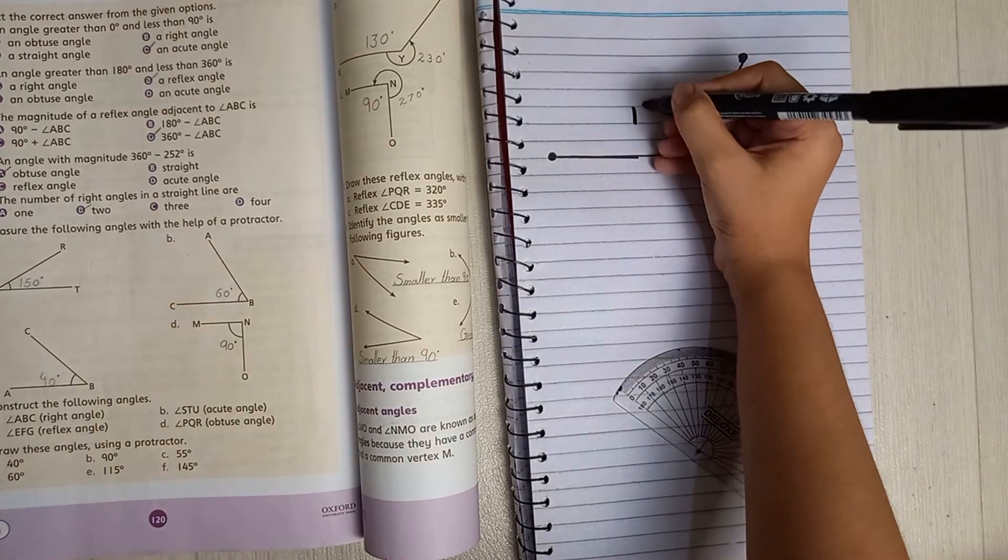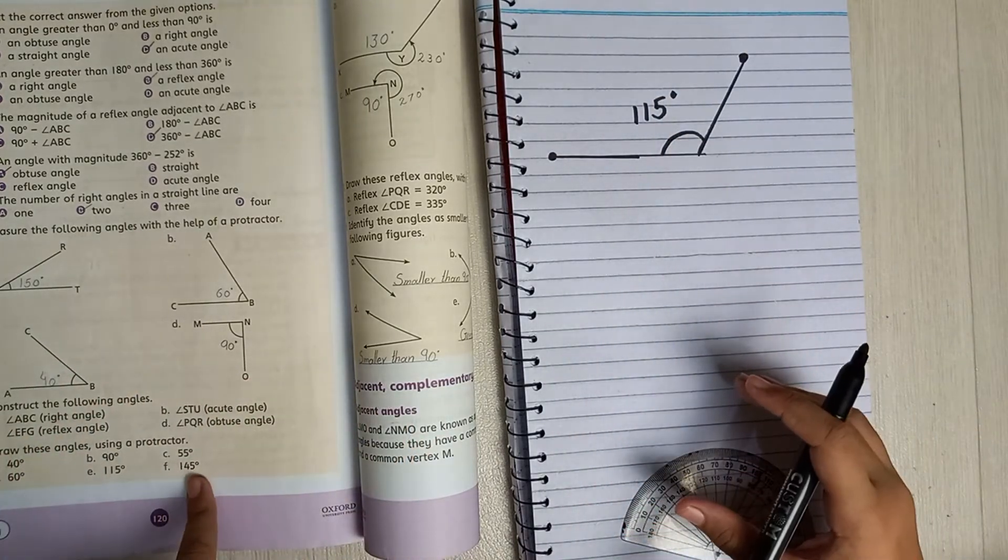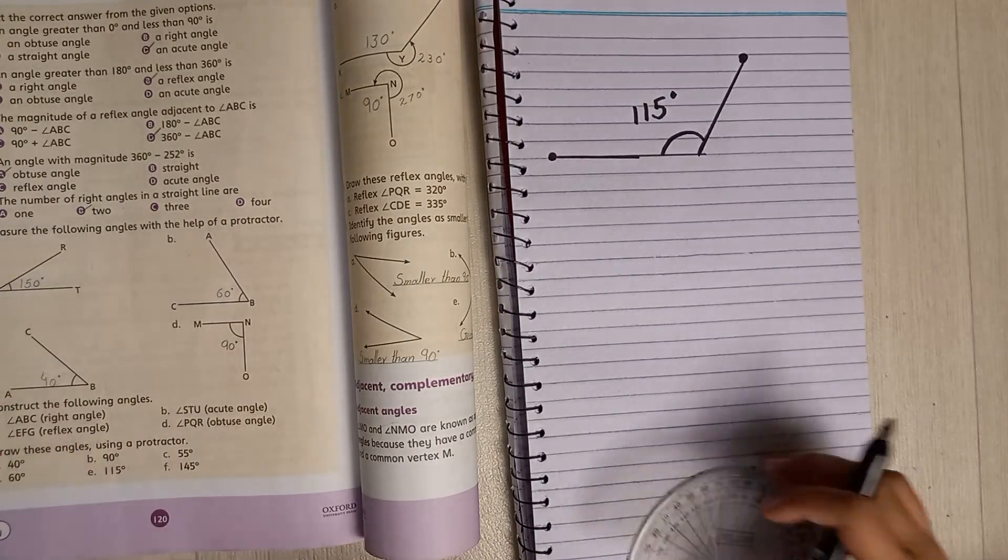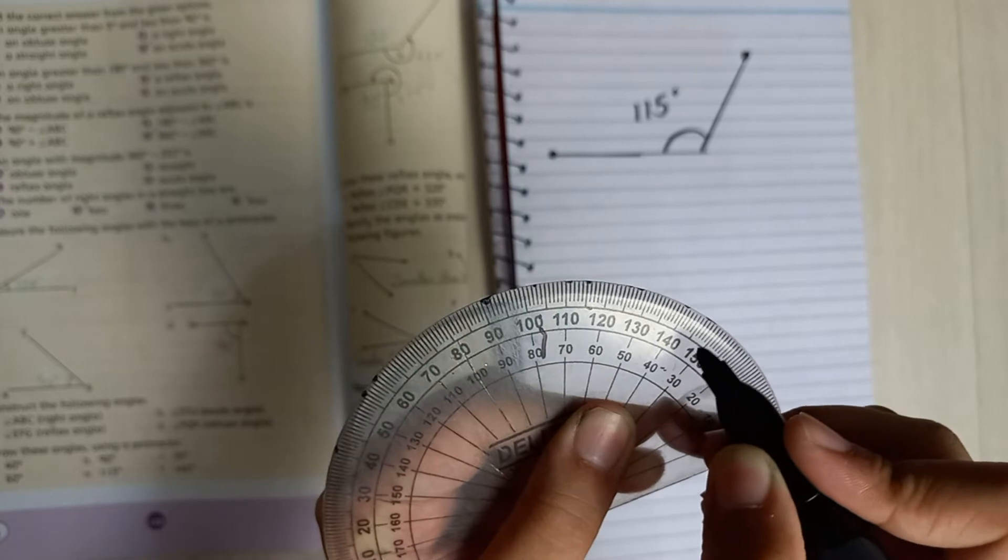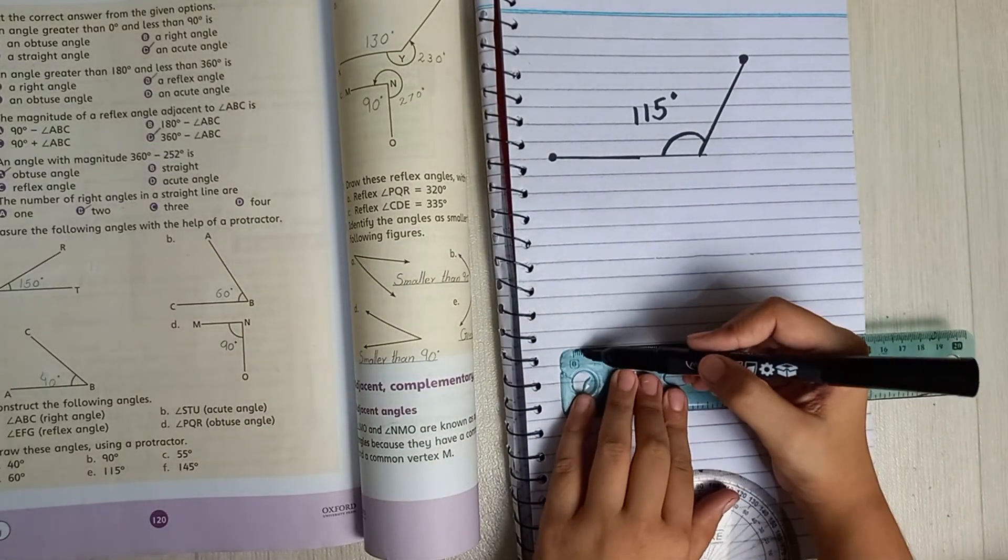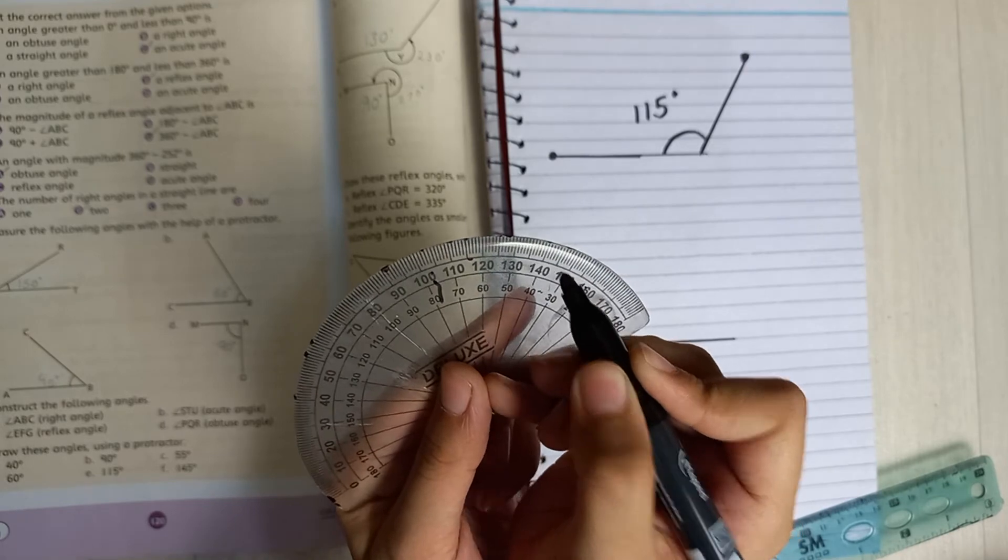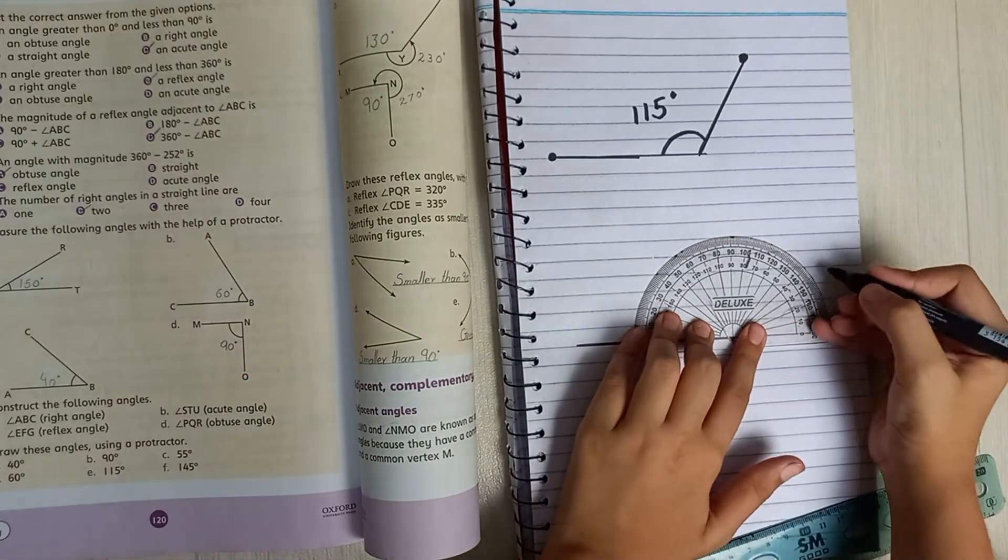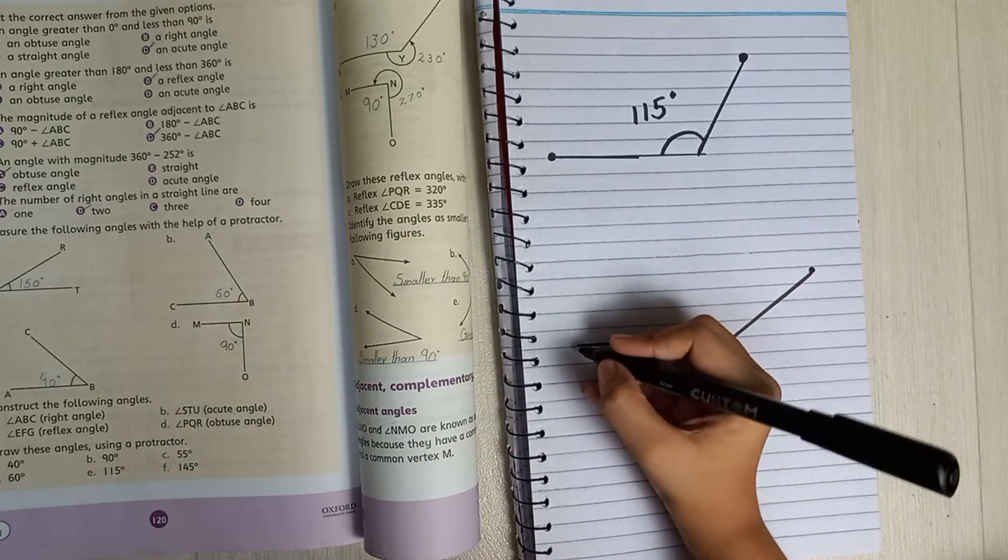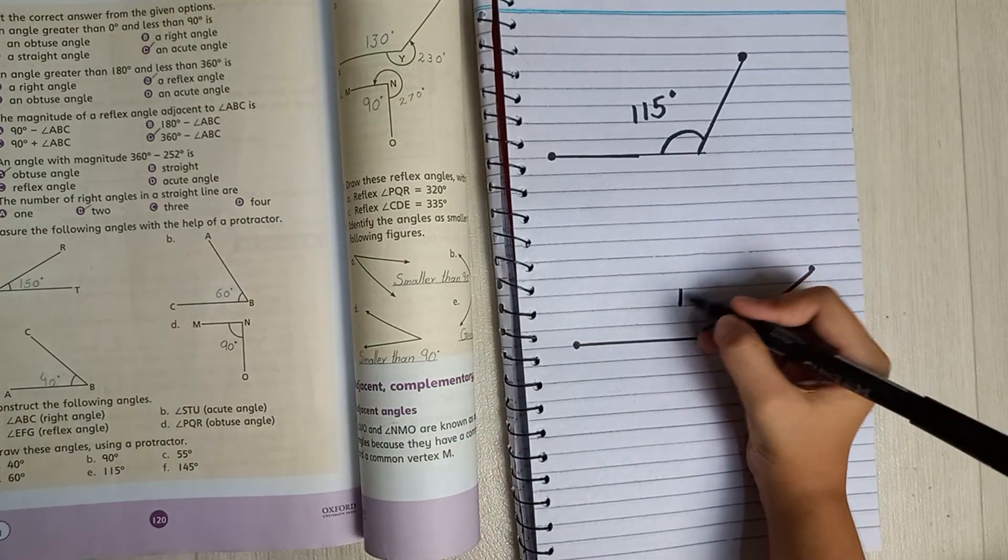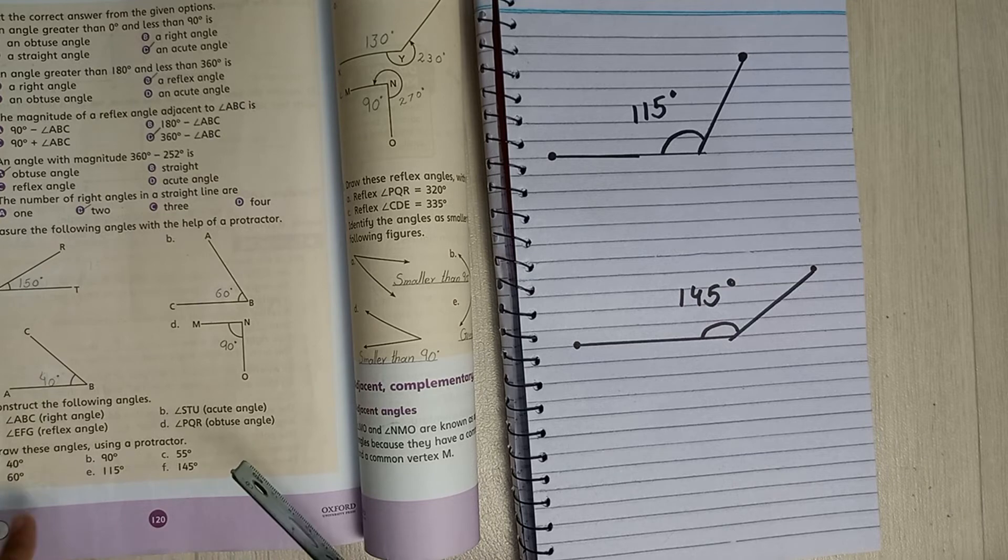The last part is part F, 145 degrees. It is right here because we cannot go right here - it says four in the middle. Count five lines. There you go. Count your five lines, which should be right here. Draw the angle. Perfect. We're done with 145 degrees.